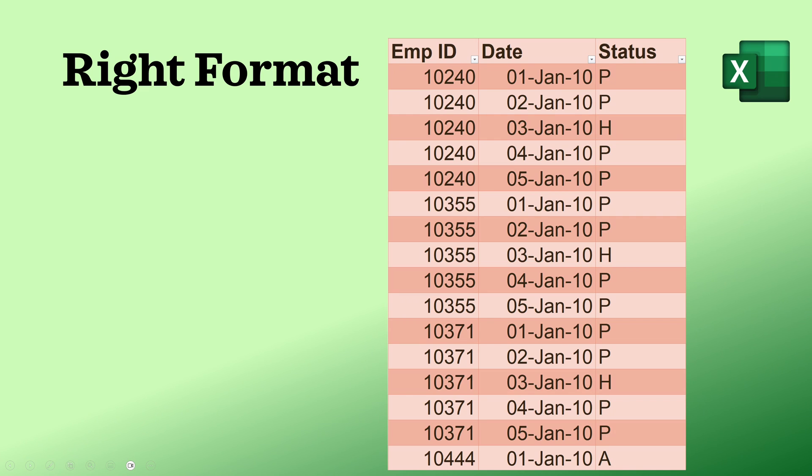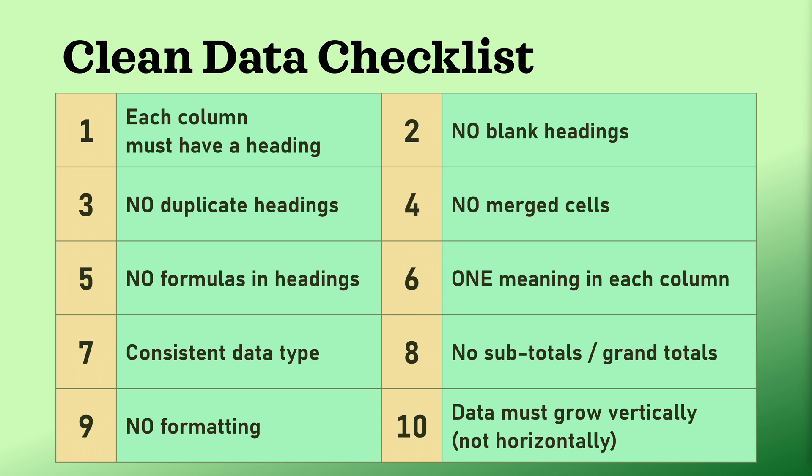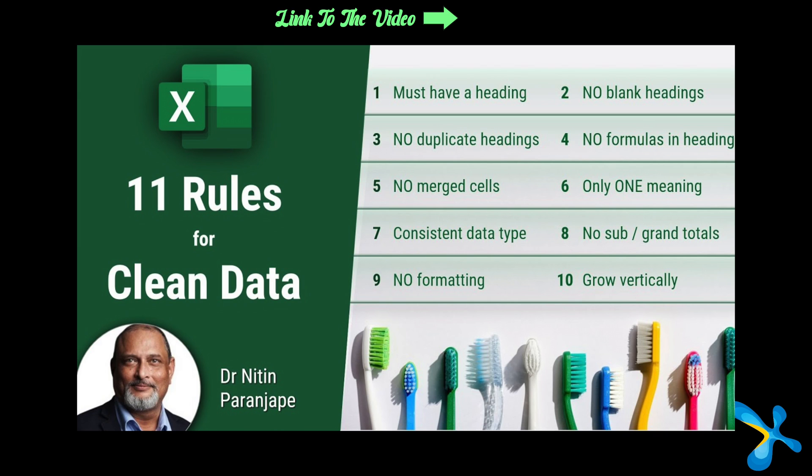Make sure you enter data following the rules so that you don't have to do any data cleaning afterwards — you will be able to get reports instantly. If you are entering data like a muster, then you are violating the rule that every column must have a heading. Those dates — 1, 2, 3, 4, 5 — are not headings; they are dates. So actually we just need three columns for proper data entry: employee number, date, and status. Once you have that, you can create any kind of report from it using pivot table and other features of Excel.